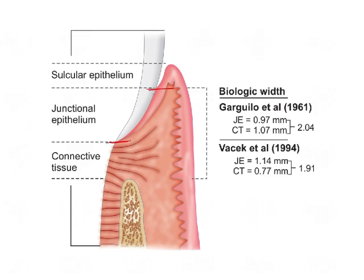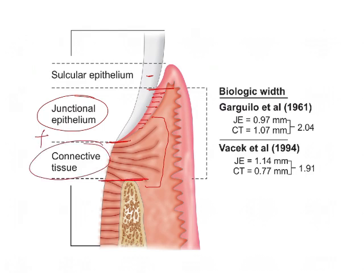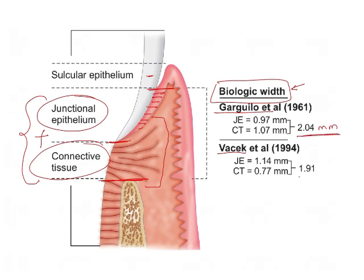From here to here there is some amount of epithelium in contact with the tooth. This epithelium is known as junctional epithelium. Below the junctional epithelium is the connective tissue up to the alveolar crest. The total of junctional epithelium and connective tissue underneath is known as biologic width, given by Gargulo et al. and Vacek et al. The measurement of this junctional epithelium is 2.04 mm or nearly 1.9 mm.